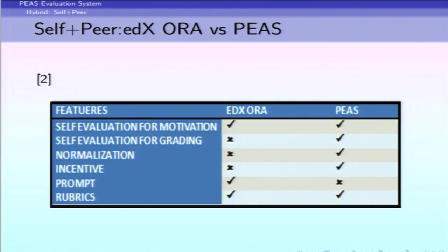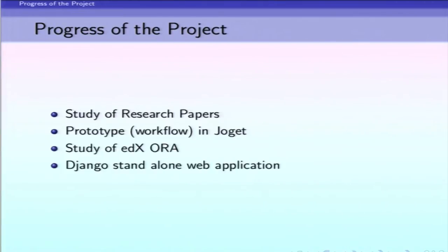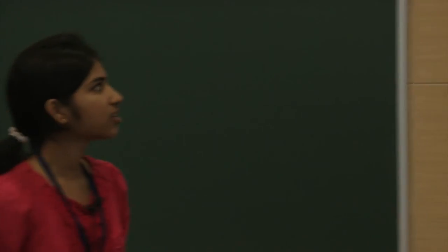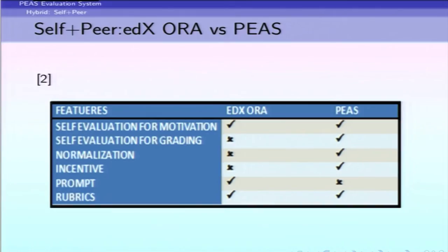There are differences between the self-grading module in PEES and edX ORA. EDX ORA does not use self-evaluation for grading purposes, while in PEES self-grading can be used as a grading technique — for example, through self plus peer combination — making it useful for both grading and learning. Additionally, there is no incentive normalization in EDX ORA, while PEES has incorporated it.